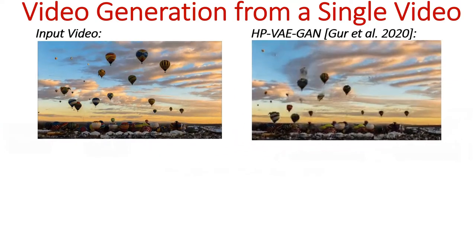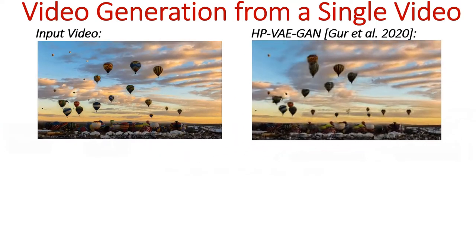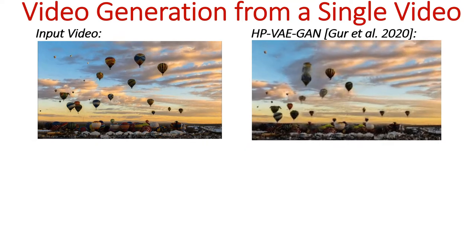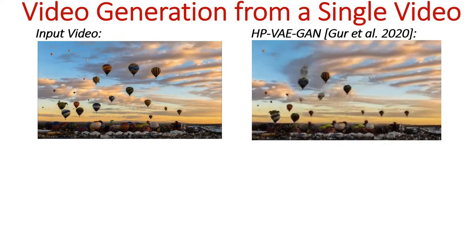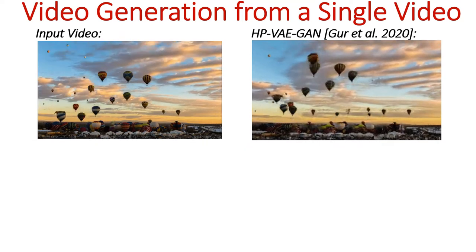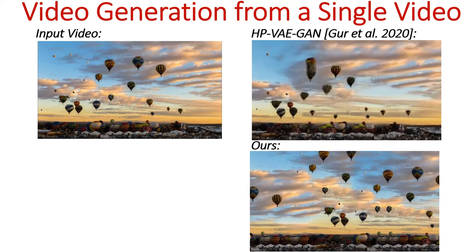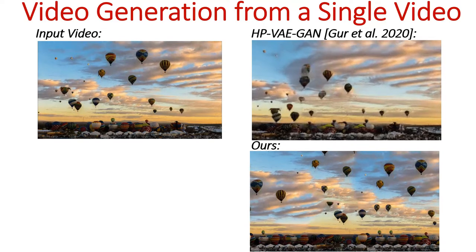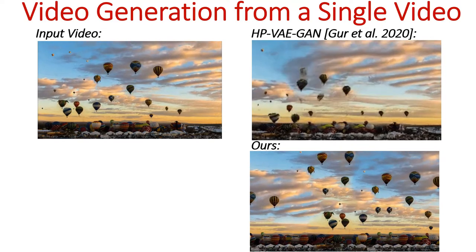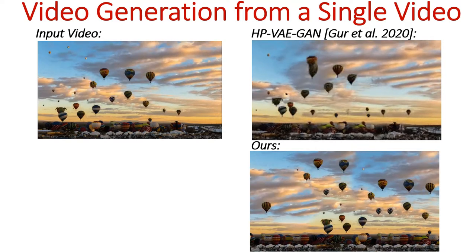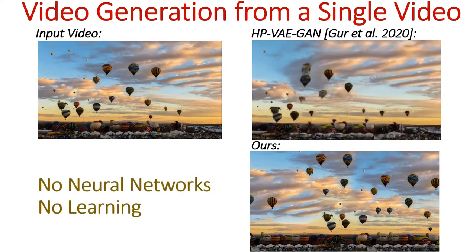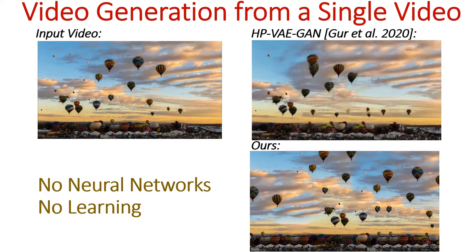In general, GANs take very long time to train and their outputs tend to suffer from low quality. In our work, we show that video generation from a single video can be solved to much higher quality and orders of magnitude faster by using non-parametric patch-based methods.